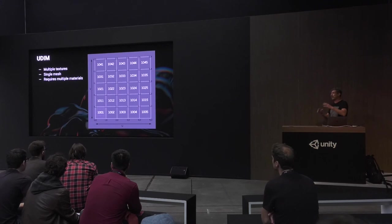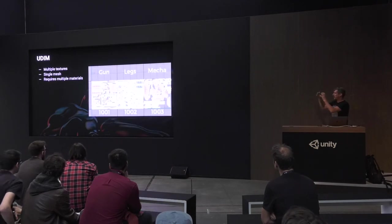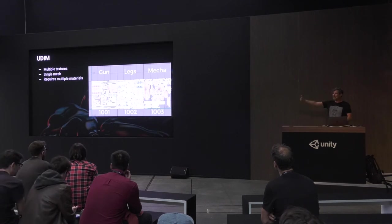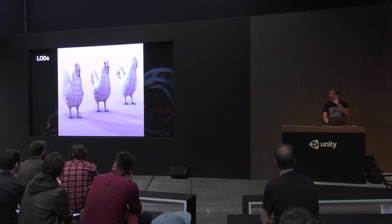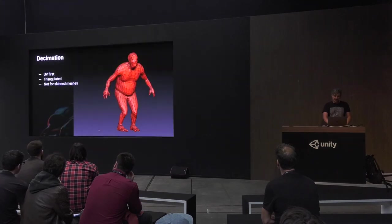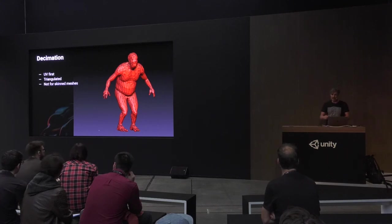UDIMs are where one mesh has different UV sets in quadrants, each with their own texture — more of a film pipeline thing but it's coming in through photogrammetry into Unity. You should use LODs — levels of detail — that change based on distance to the camera. Keep those in quads so you can edit them, and have your UVs laid out before you start making LODs. Decimation — Decimation Master in ZBrush just triangulates and keeps the form. You don't want to do deformations on something that's decimated, but have the UVs done first.